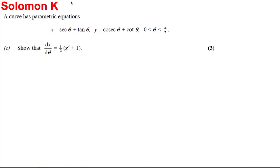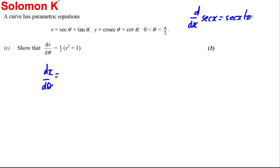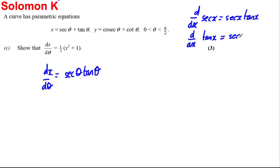Next, we're asked to show that dx/dθ equals the given expression. Differentiating X = sec θ + tan θ: the formula booklet tells us d/dx of sec x is sec x tan x, giving sec θ tan θ. It also tells us d/dx of tan x is sec²x, giving plus sec²θ.